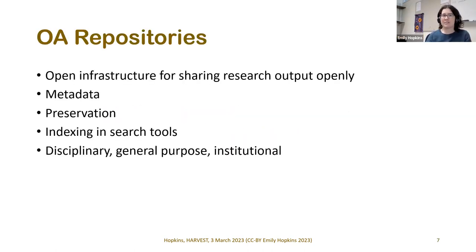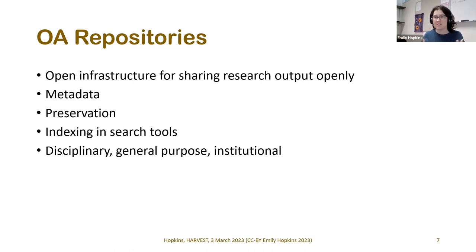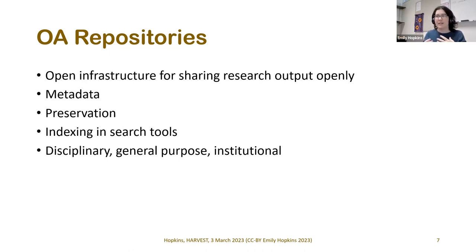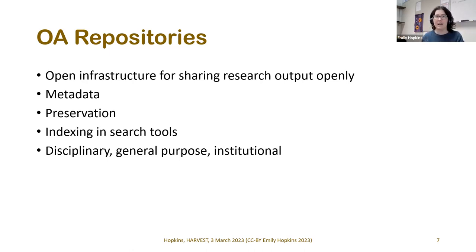Open access repositories are open infrastructure for sharing research output openly. It's important that both the research and the infrastructure are open so we can guarantee long-term access and preservation. Services like Figshare let you share things openly, but the infrastructure is still owned by Springer Nature — they control it, which is tricky for ensuring worldwide long-term access. Metadata is also important: alongside the file itself, there's structured information — who wrote it, the title, format, subjects — which helps index content for search tools like Google Scholar.